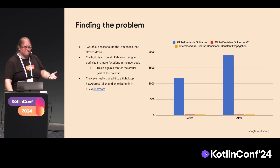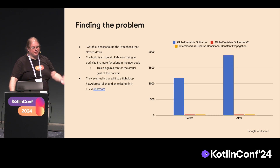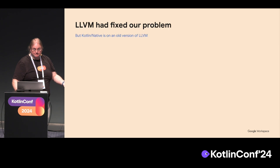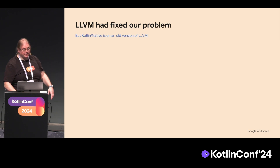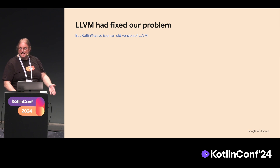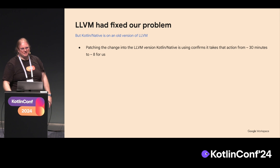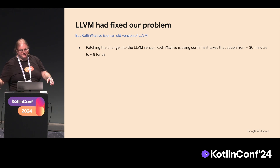Time to profile LLVM. It all comes down to one pass in LLVM. What can we do with one slow pass? LLVM had already fixed our problem — all we had to do was update LLVM in Kotlin native. The first step was to take the patch from somewhere far in the future, patch it into the current version of LLVM Kotlin native was using, and see if it actually solved the problem. Not only did it solve the 10 minutes, it took that particular build step from 30 minutes to 8 minutes. It was great.